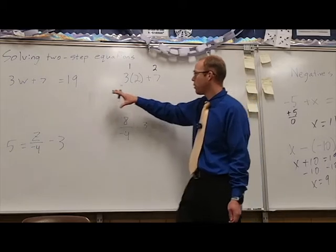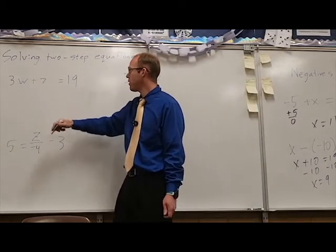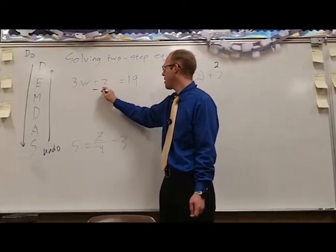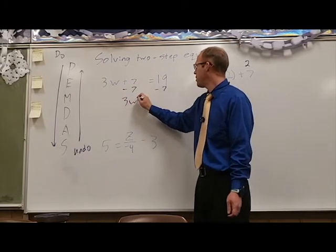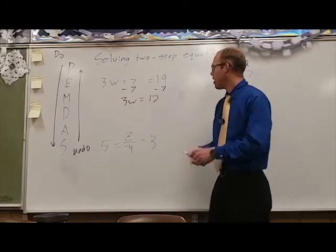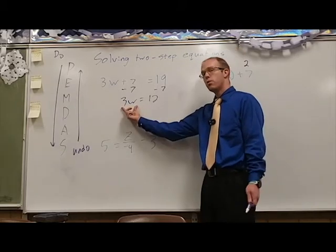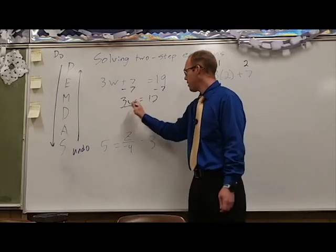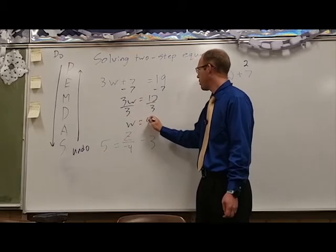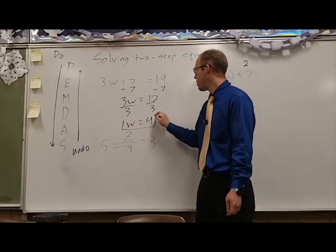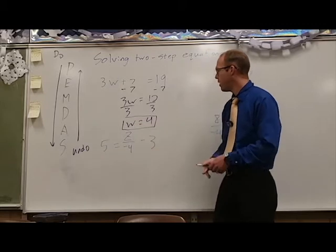All right, so let's go back to our equation. That means we have to undo the seven first, so we'll subtract seven to undo that addition, and we end up with 3w equals 12. And now all we have is multiplication, so we can undo that easily by dividing by three on both sides. That gives us w equals four, and we are finished because the w is by itself.